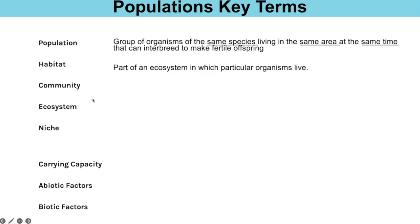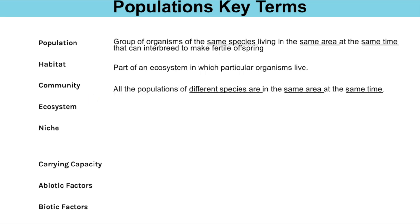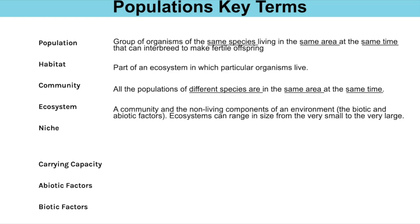Abiotic would just be one mark: it's the part of an ecosystem in which particular organisms live. Community is all the populations of different species in the same area at the same time. The ecosystem is the community and the non-living components of the environment — essentially the biotic and abiotic factors — and you need to have an awareness that ecosystems can range in size from very small to very large, like global.